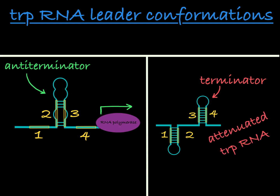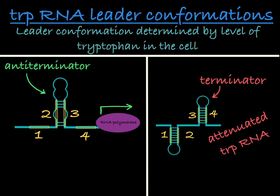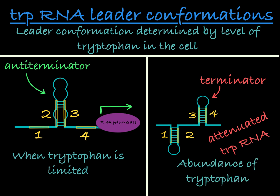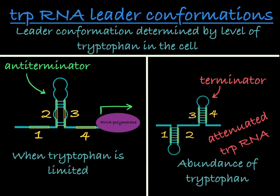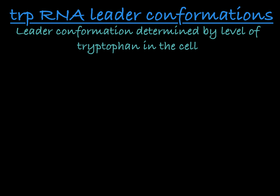So what causes one RNA leader conformation to form over another? Just like we saw with the repressor protein, the deciding factor is the level of tryptophan in the cell. When there is less tryptophan, you see the conformation containing the anti-terminator, which allows the cell to make more tryptophan. When there is an abundance of tryptophan, you see the formation containing the terminator, which prevents the production of additional tryptophan through trp gene expression.